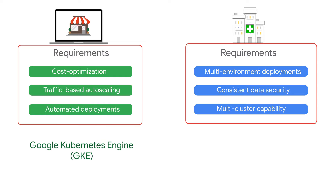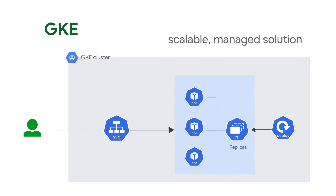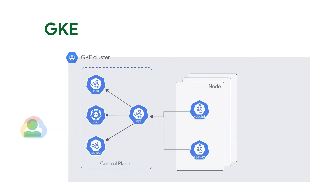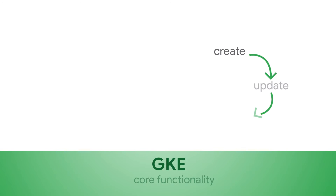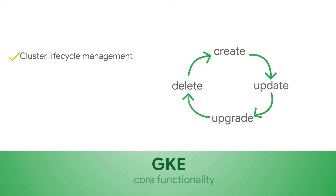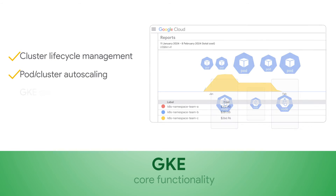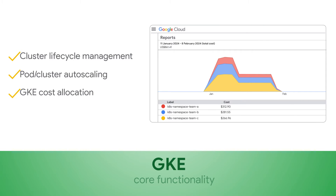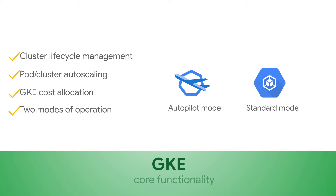GKE is a good fit for Sleek Chic. With GKE, you can deploy, manage, and scale containerized applications with ease. It's designed for developers and operators who want to run containerized applications at scale without having to worry about managing the underlying components. This tier provides core functionality, including fully automated cluster lifecycle management, pod and cluster auto-scaling, cost visibility, and it offers both the autopilot and standard operation modes.